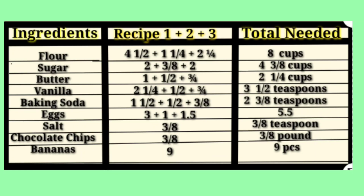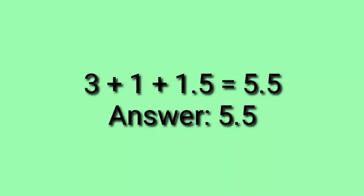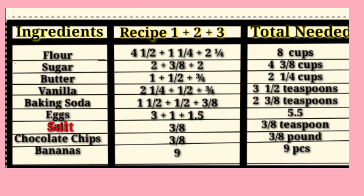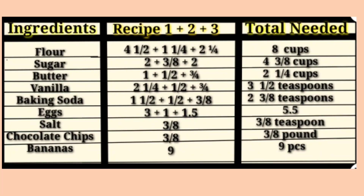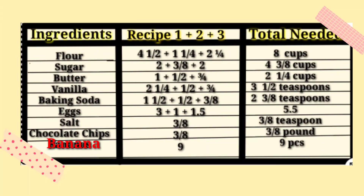The next ingredient is eggs. From banana bread, we need 3 eggs; from chocolate chip cookies, 1 egg; and from sugar cookies, 1.5 eggs. So 3 plus 1 plus 1.5 equals 5.5 eggs. Next, salt — we only need 3/8 teaspoon of salt for chocolate chip cookies. Next, chocolate chips — we only need 3/8 pound for the chocolate chip cookies recipe. And the last ingredient is banana — we only need 9 bananas for banana bread.